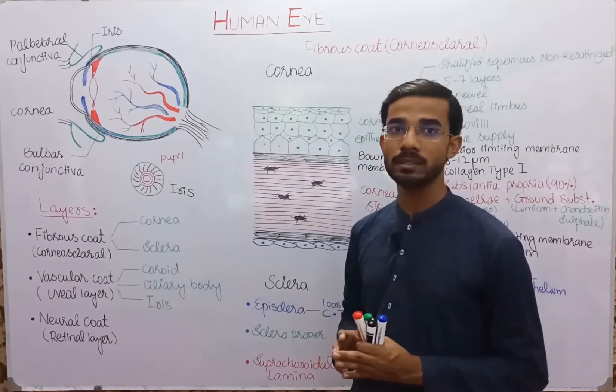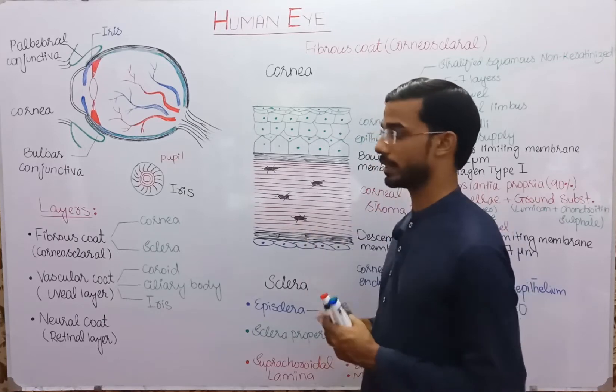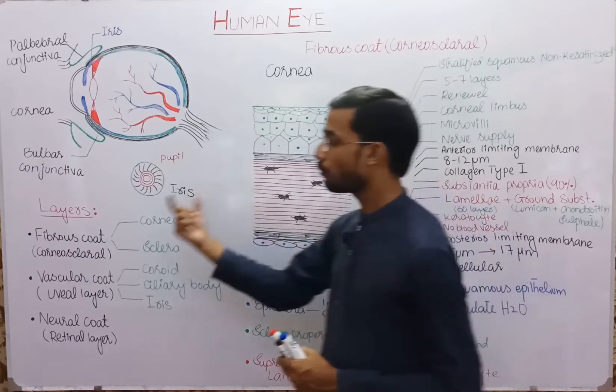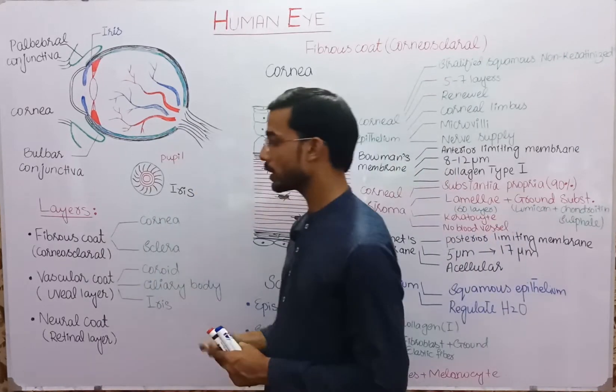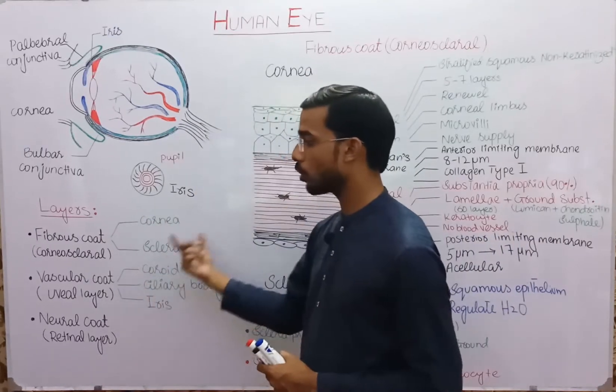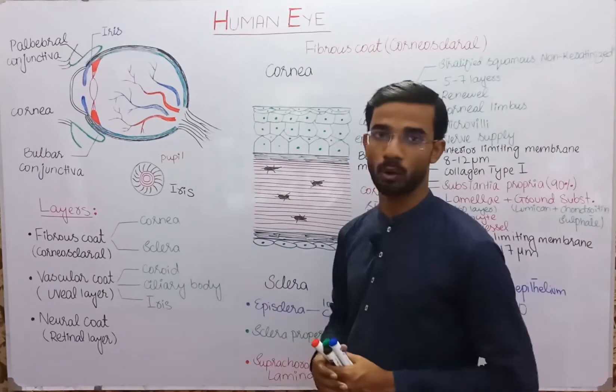The eye has three layers: fibrous cord, vascular cord, and neural cord.